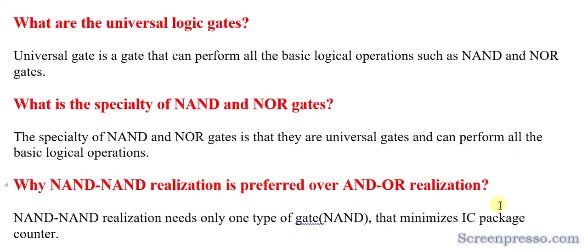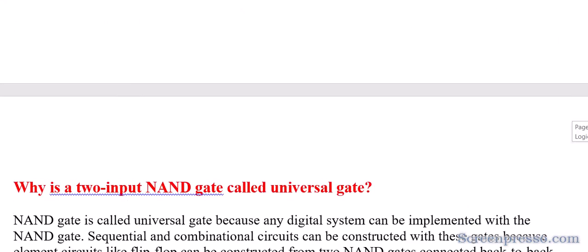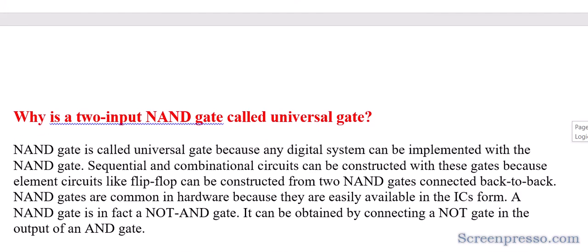Why is NAND-NAND realization preferred over AND-OR realization? NAND-NAND realization needs only one type of gate — NAND — which minimizes the IC package count. IC realization becomes much easier when using NAND-NAND realization. If AND-OR is used instead, the IC package count will be higher. Hence NAND-NAND realization is preferred over AND-OR realization.